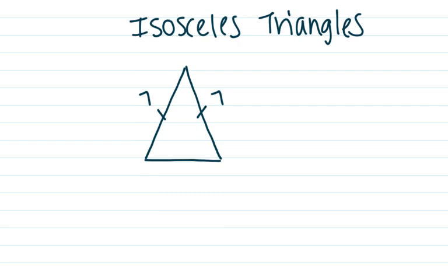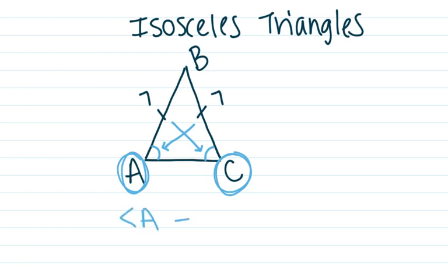A fun fact about isosceles triangles that we haven't talked about before is the angles opposite of those sides. So we'll label this. Let's call this triangle ABC. So we're talking about angle A here and angle C. Those angles actually are equal as well. So angle A equals angle C.